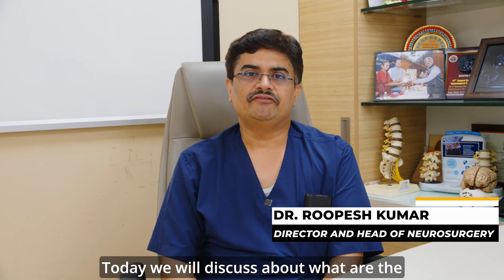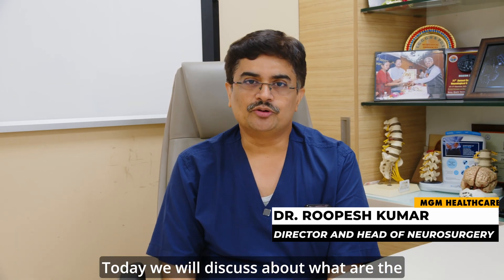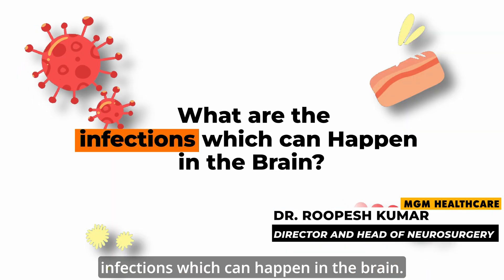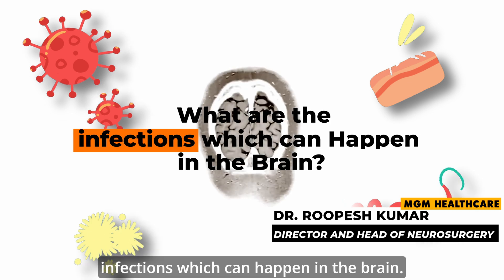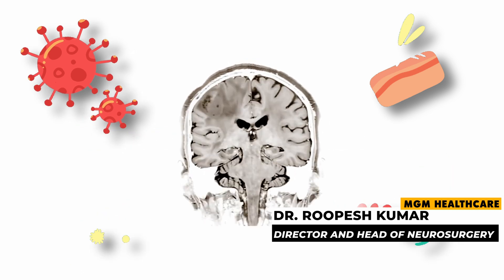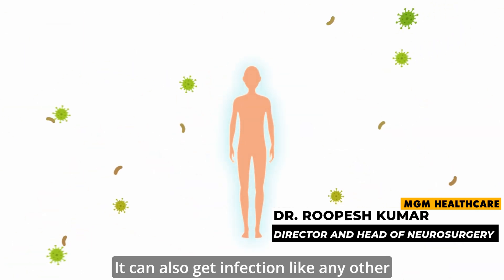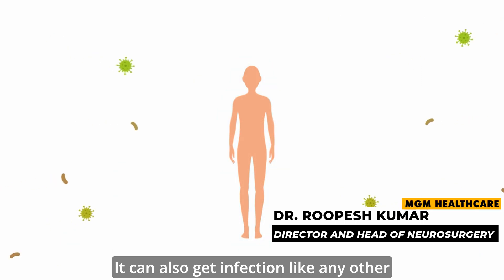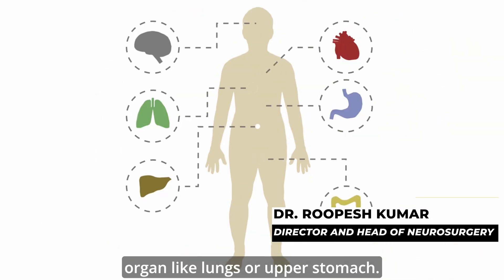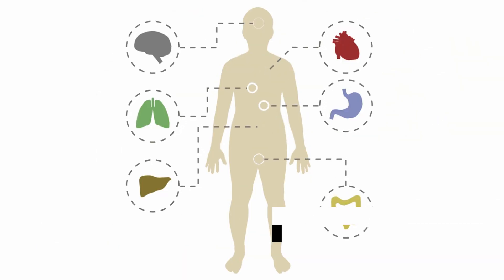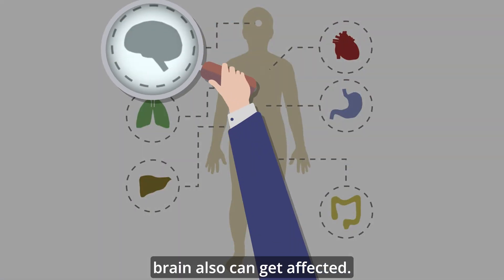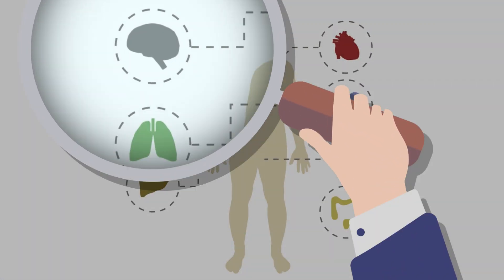Namaste. Today we will discuss what infections can happen in the brain. Brain is not immune to infection — it can also get infected like any other organ such as the lungs or stomach. So whatever organs can be affected by infection, the brain can also get affected.